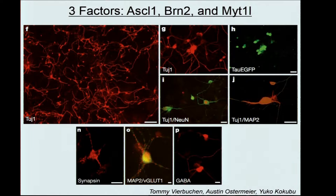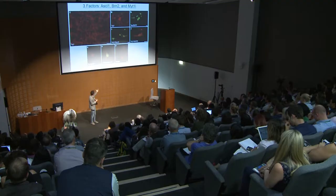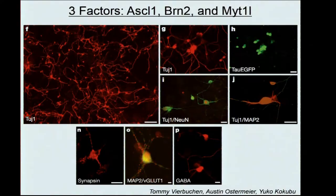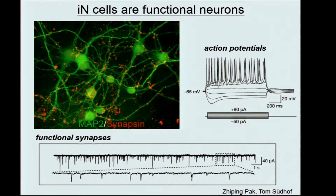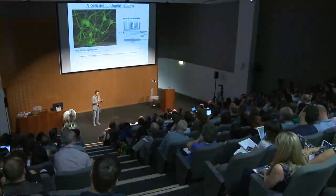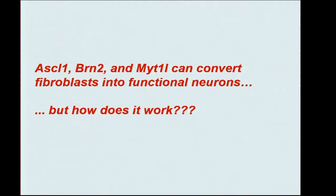The efficiency was now much higher — about 20% of the starting population — so we had many more cells to characterize. We showed that these cells express essentially all pan-neuronal markers that we are aware of. Most importantly, a talented postdoc in Tom Südhof's lab, Zhiping Pang, demonstrated that these cells had the two principal functional properties of neurons: they were able to fire action potentials and form synaptic contacts with each other. We had shown it is actually possible to convert fibroblasts into neurons, and ever since we have been curious how these transcription factors accomplish this task.